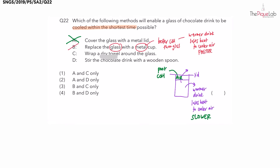The third method: wrapping a dry towel around the glass. What happens when you wrap a dry towel around the glass? You actually trap a layer of air around the glass. As we discussed, air is a poor conductor of heat. That warm drink is going to lose heat slower due to that trapped air around the glass. This method will not work in cooling the drink quickly.